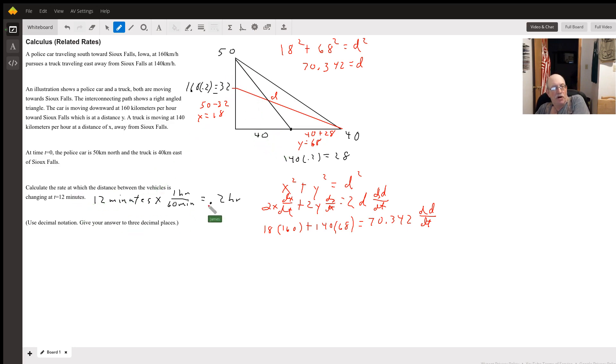They drove for 12 minutes which is two tenths of an hour. So the distance the police car went in those two tenths was 32 kilometers which means he is 18 miles from Sioux Falls.